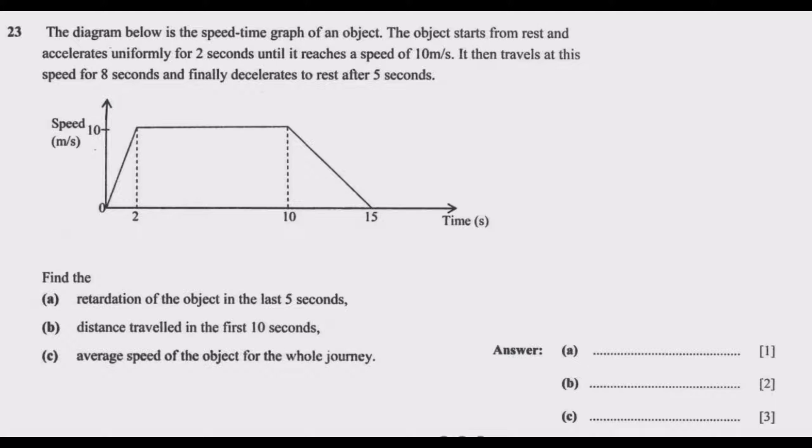Find the retardation of the object in the last 5 seconds. We are looking at this part. We know that acceleration is given by final velocity minus initial velocity over change in time. The final velocity is 0 minus initial velocity at the point it started retardation which is 10 meters per second, divided by time it took. So it's 15 minus 10, we end up with minus 10 over 5, which gives us minus 2 meters per second squared as the acceleration.